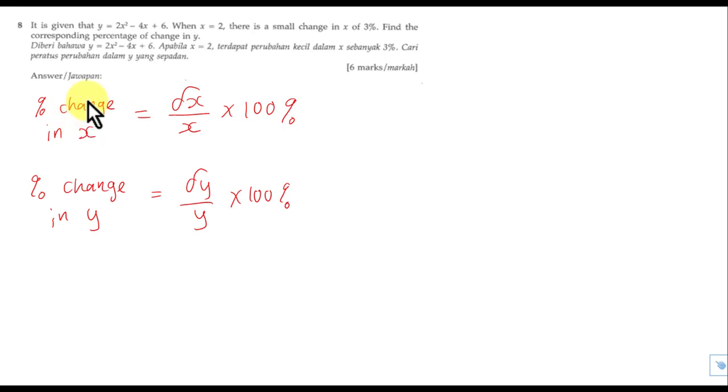If I want to substitute this 3% into this formula, this is what happened. I will say change of X is what I do not know. Original value of X is 2, and then multiply 100% equals to 3%, because the 3% is the percentage change in X. By solving this, I should be able to easily get the value for change of X.